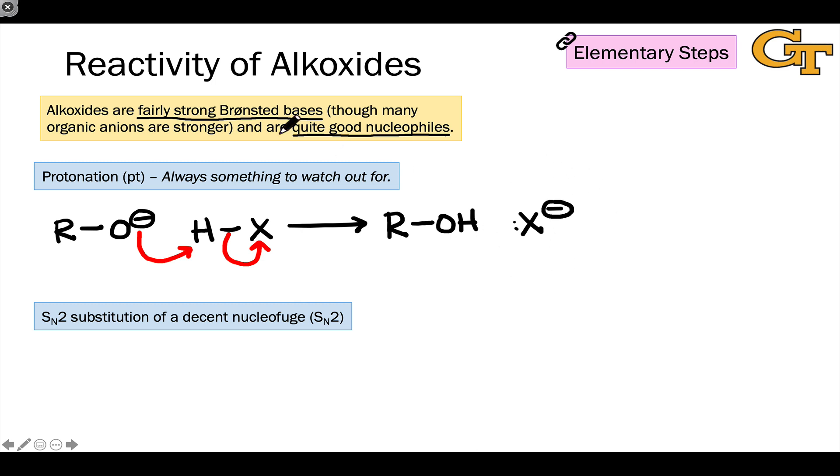Alkoxide bases can be used to generate a wide variety of nucleophiles in organic reactions. We'll see this used in cases when the conjugate base is relatively stable. This will often turn into a nucleophile in a subsequent elementary step, and so this proton transfer from an acid to an alkoxide is important to keep in mind.